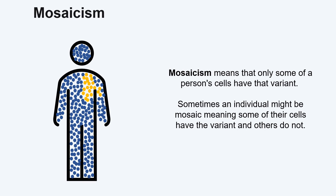Sometimes a variant is found in only some of a person's cells. This is called mosaicism. Mosaicism can happen when a change to the DNA occurs during development. As a result, only a portion of the individual's cells have the variant and the rest of the cells do not contain the variant.